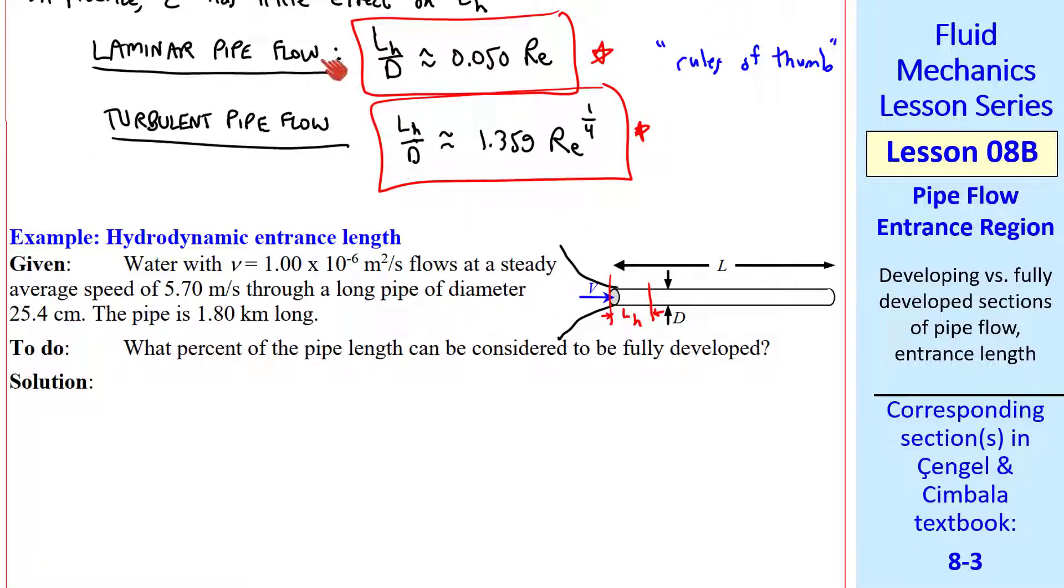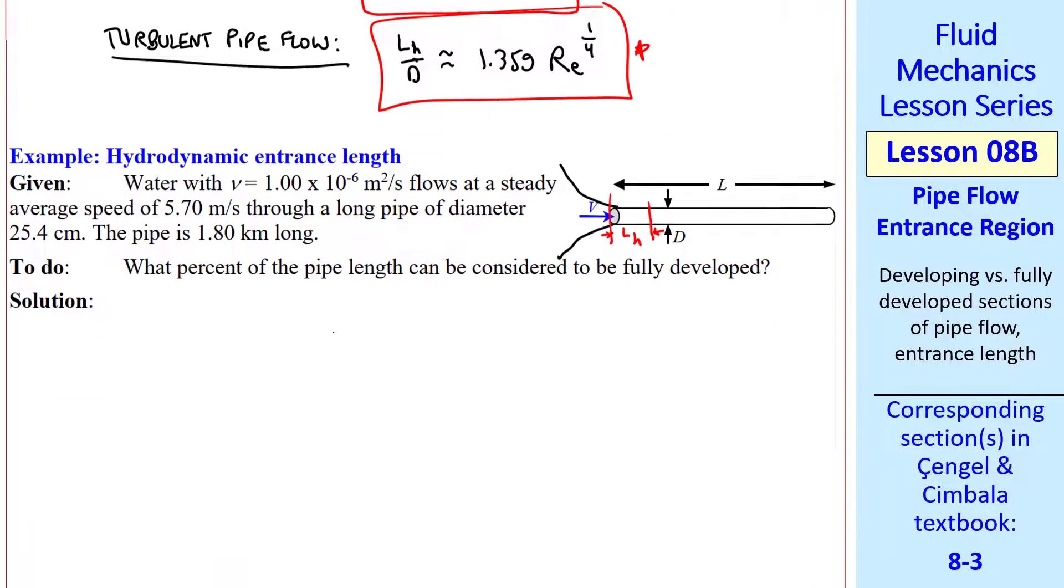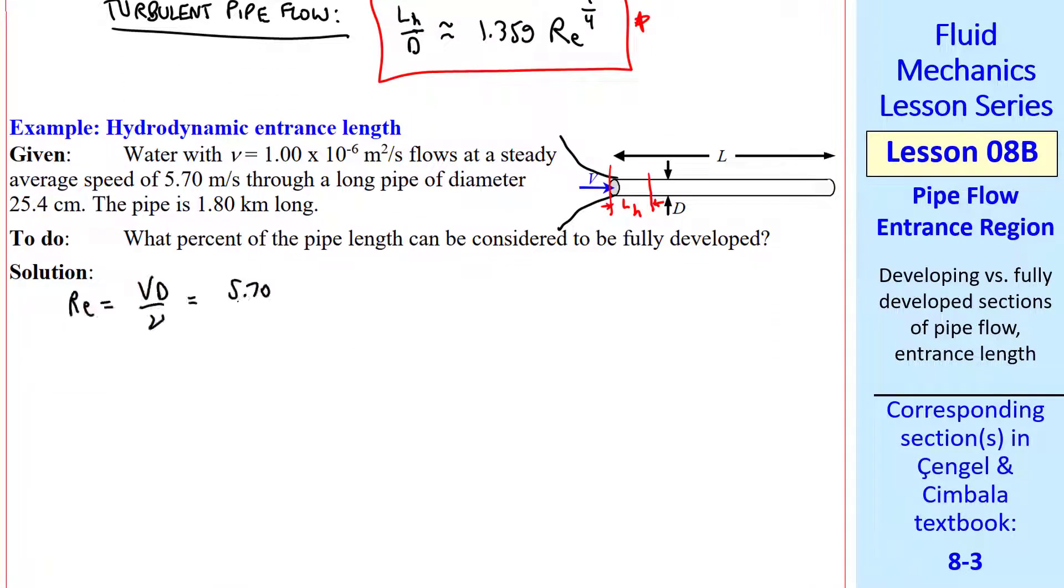Well, first we must determine whether this flow is laminar or turbulent. So we calculate the Reynolds number. Re equals V*d over nu. We plug in the given values, being careful with units as always. We get about 1.44 million as our Reynolds number. This is much greater than 4,000. So this flow is definitely turbulent.